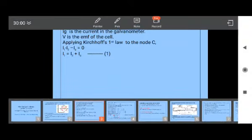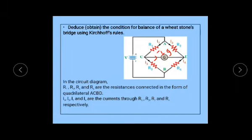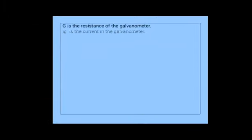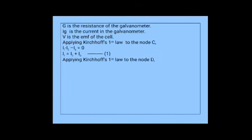Now let us choose node D and apply Kirchhoff's first law again. At node D, I2 is entering, IG is entering, but I4 is leaving the node. Applying the rule, you get I2 + IG − I4 = 0, which gives I2 + IG = I4. Name this equation 2.